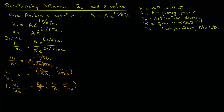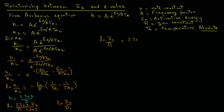Recall from a previous tutorial that there is a relationship between k and D-value, where k equals 2.303 over D. So we can rewrite the left-hand side as the natural log of 2.303 divided by D1, times D2 over 2.303. The 2.303 terms cancel out, leaving natural log of D2 over D1. We can also convert that natural log into log base 10, so we have natural log of D2 over D1 equals 2.303 times log base 10 of D2 over D1.